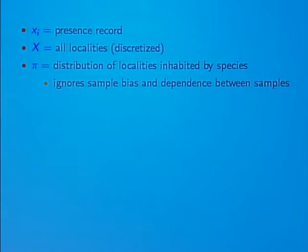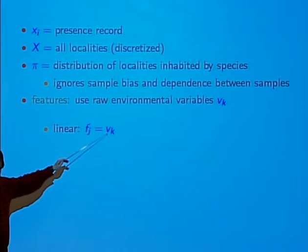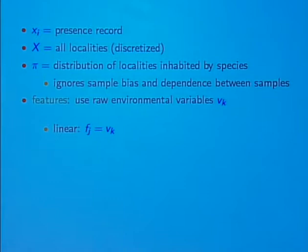Now what about these features? The features could just be the environmental variables. So we could have one feature equal to temperature, another equal to altitude, and so on — we could just let the features equal the environmental variables. We would call those linear features.